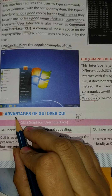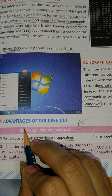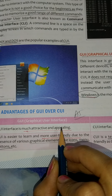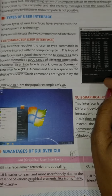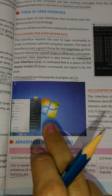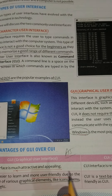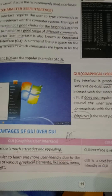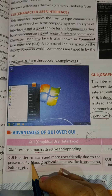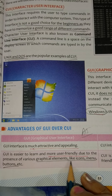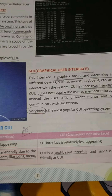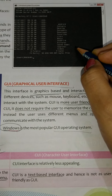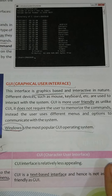Now we have advantages of GUI over CUI. First, GUI interface is much more attractive and appealing — it is colorful, while CUI is black. Students can learn easily because it looks user friendly. Next, GUI is easier to learn and more user friendly because you have graphical elements like icons, menus, and buttons. CUI is a text-based interface where you have to learn and type commands, so it is not user friendly.